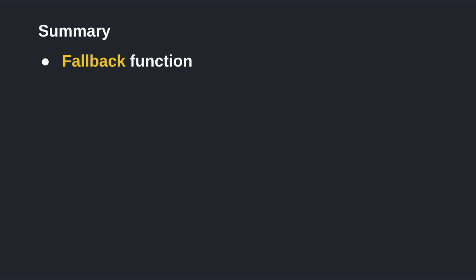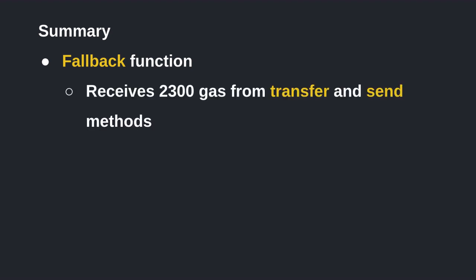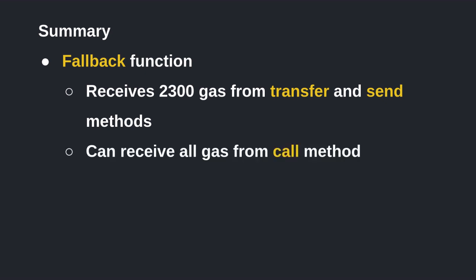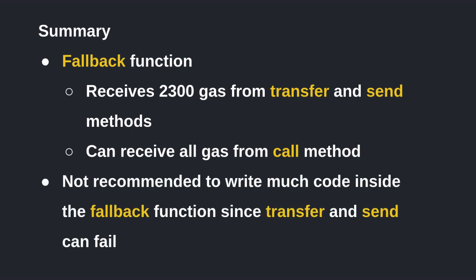In summary, the fallback function receives 2,300 gas when invoked by the send or transfer method, but it can receive more gas when invoked by the call method. The call method can forward all of the gas to the fallback function, meaning you can write code like a regular function inside it. However, it is recommended not to write much code inside it, since the function can fail if it uses too much gas — which means you won't be able to send Ether to the contract using send or transfer.